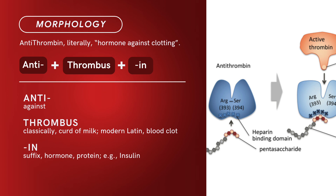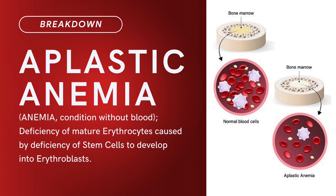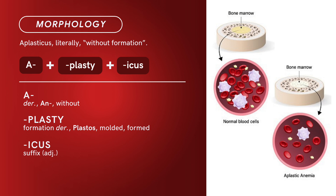Anemia means a condition that is short of normal red blood cell level. Brief definition — deficiency of mature erythrocytes caused by deficiency of stem cells to develop into erythroblasts. Term morphology: Aplasticus literally means without formation.